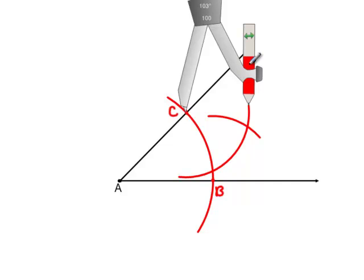The intersection of those two arcs will be a point on the angle bisector, so let's label that point D.